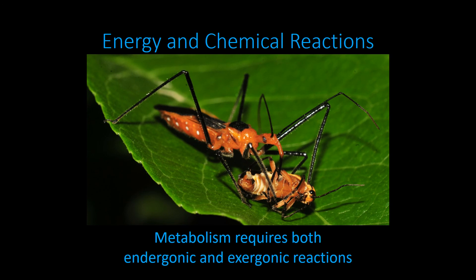To sum it up: chemical reactions are about making and breaking bonds. Some release energy — those are exergonic — and some require energy — those are endergonic. This assassin bug eating a small beetle, literally drinking the juices out of it, is acquiring nutrients and energy. Through exergonic reactions it breaks down organic molecules, releasing energy that metabolism then uses to power endergonic reactions — anabolic reactions that build larger molecules and help create order and maintain homeostasis.